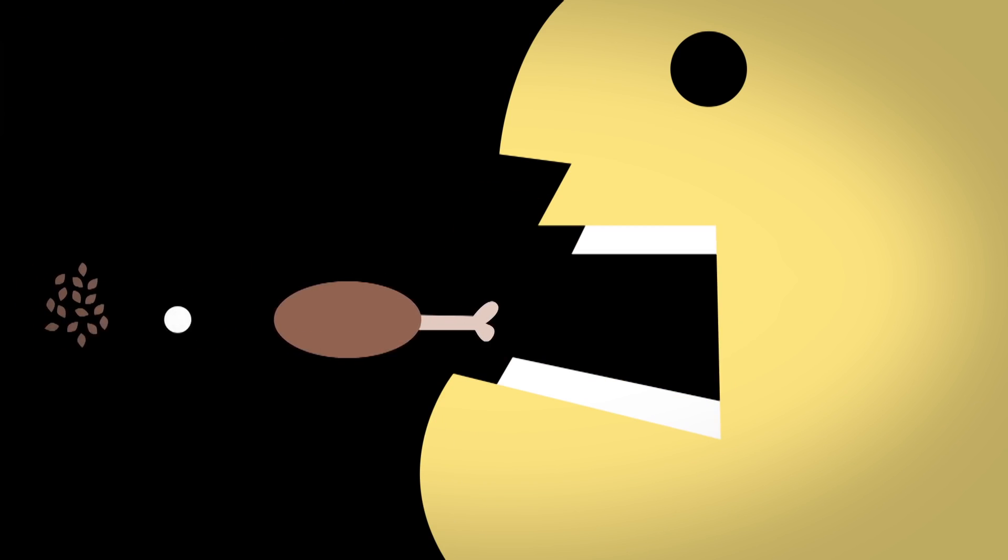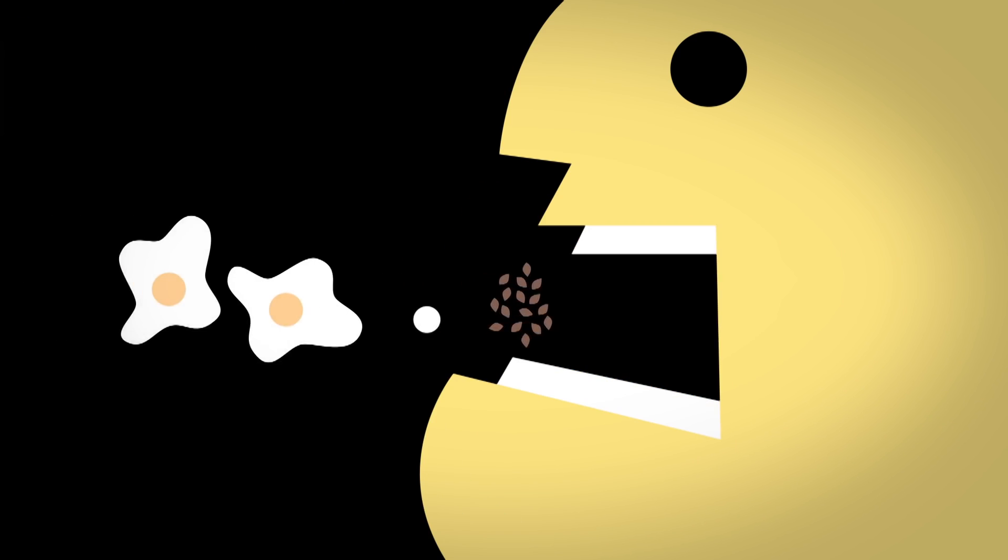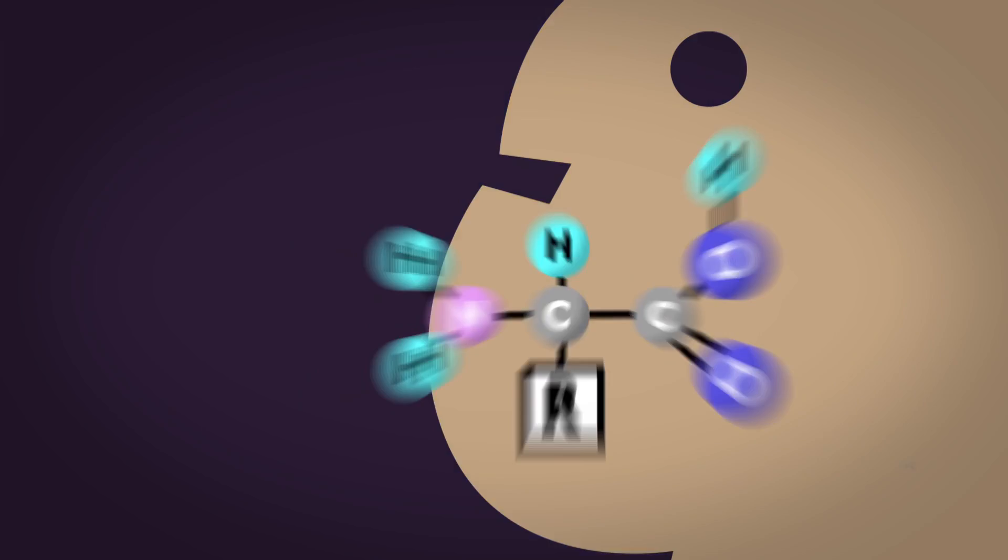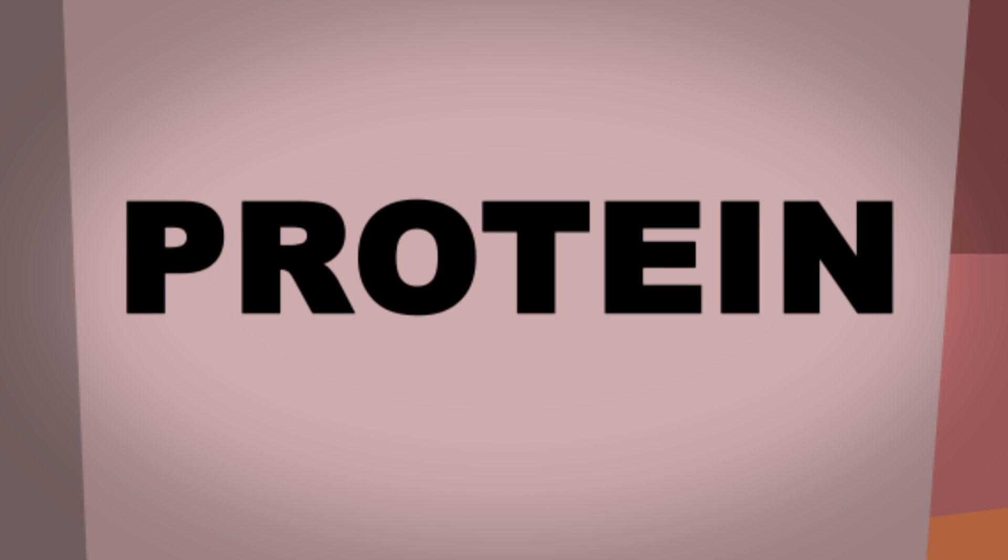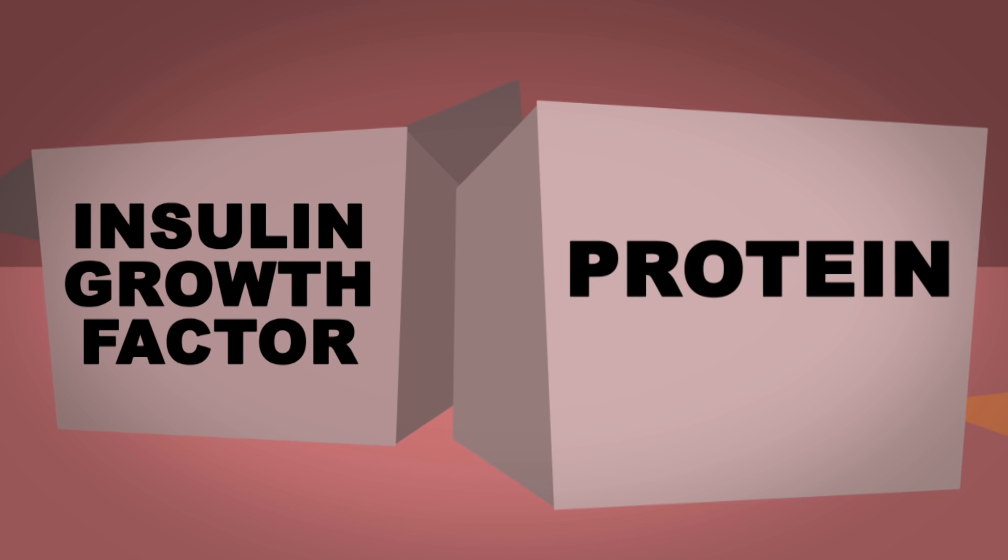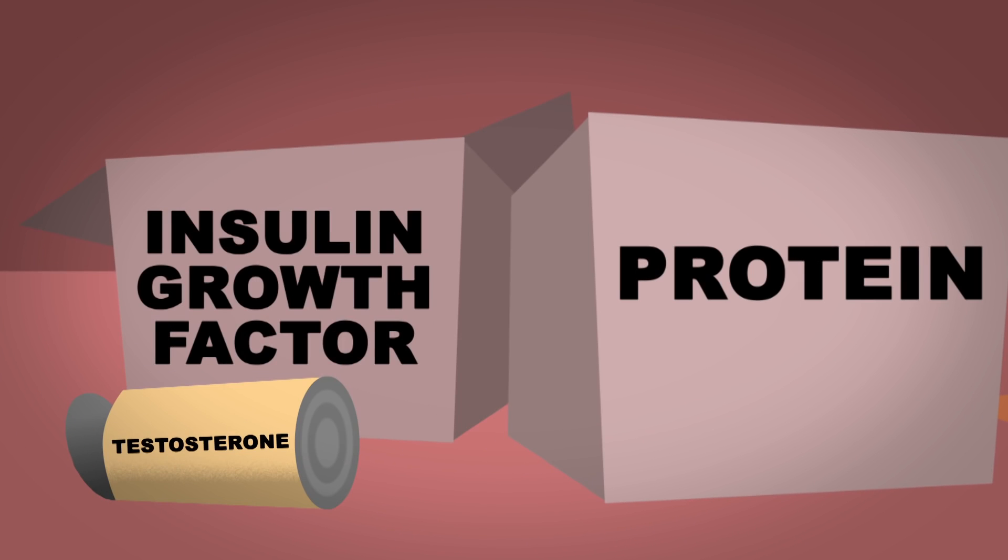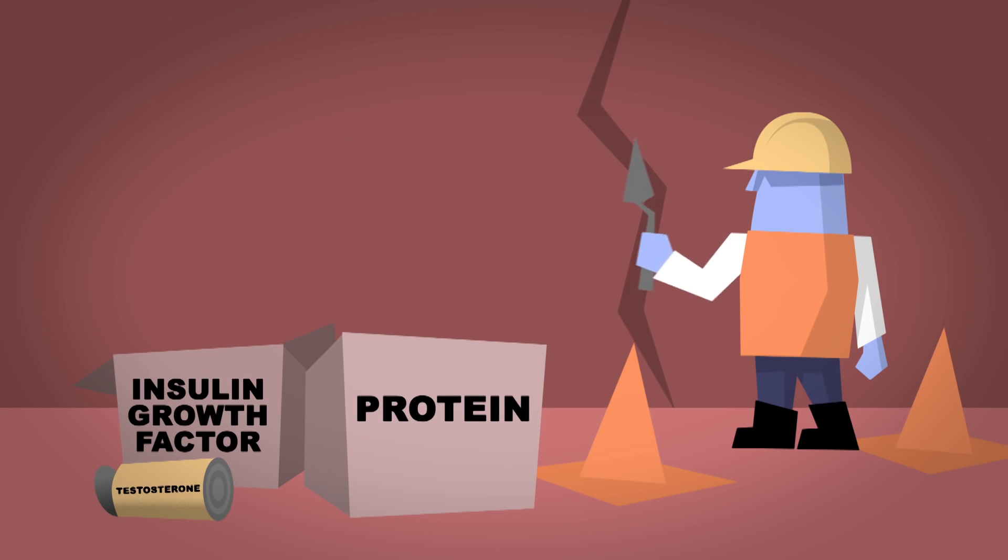Protein in our diet preserves muscle mass by providing the building blocks for new tissue, in the form of amino acids. Adequate protein intake, along with naturally occurring hormones like insulin-like growth factor and testosterone, help shift the body into a state where tissue is repaired and grown.